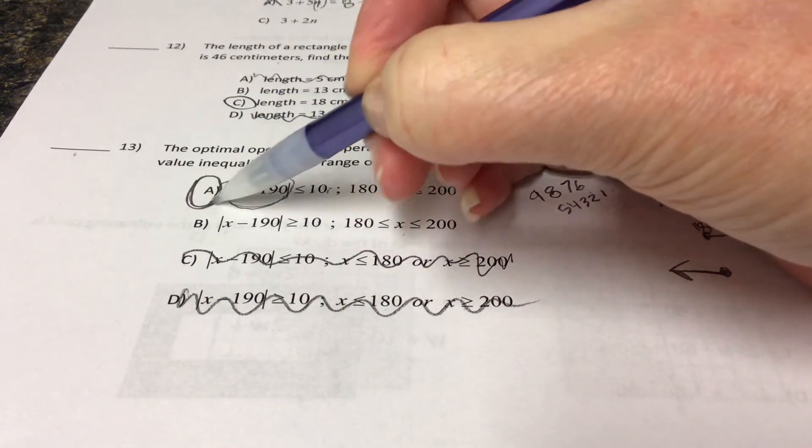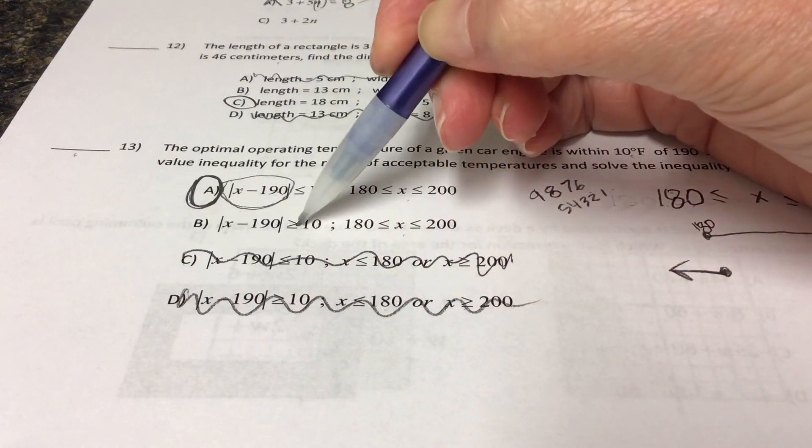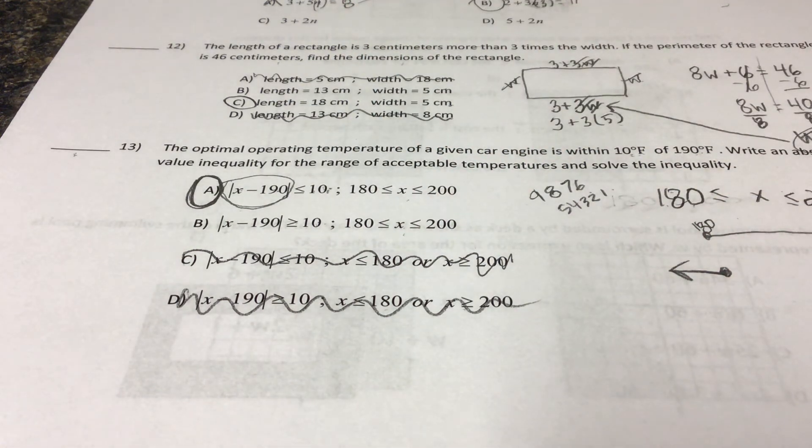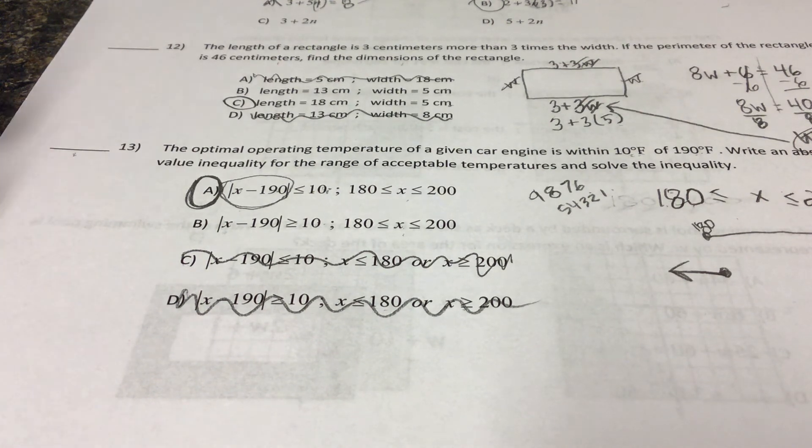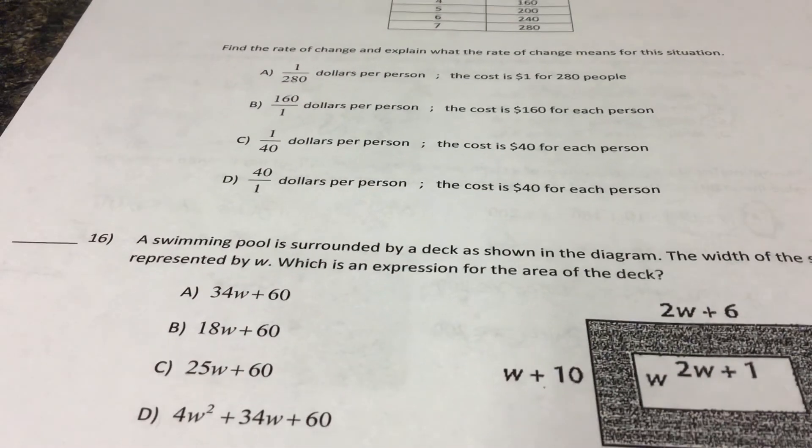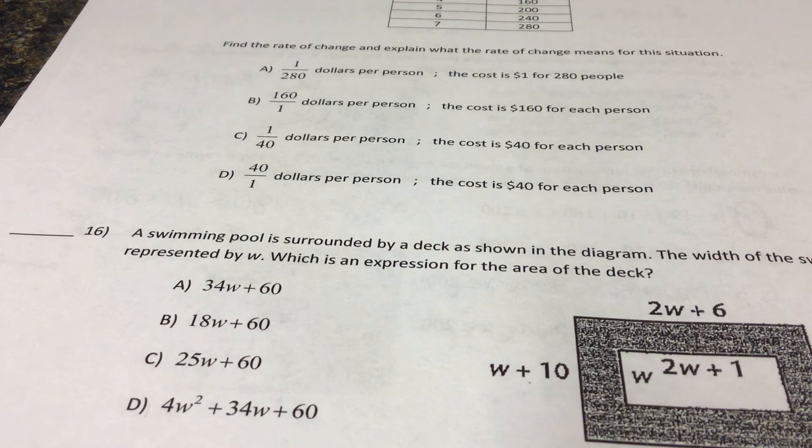Our choice is A. This one is saying that we can be greater than ten degrees off. We want to be less than ten degrees off, right? Thank you for watching this video. Our next video is going to be on questions fourteen through sixteen.